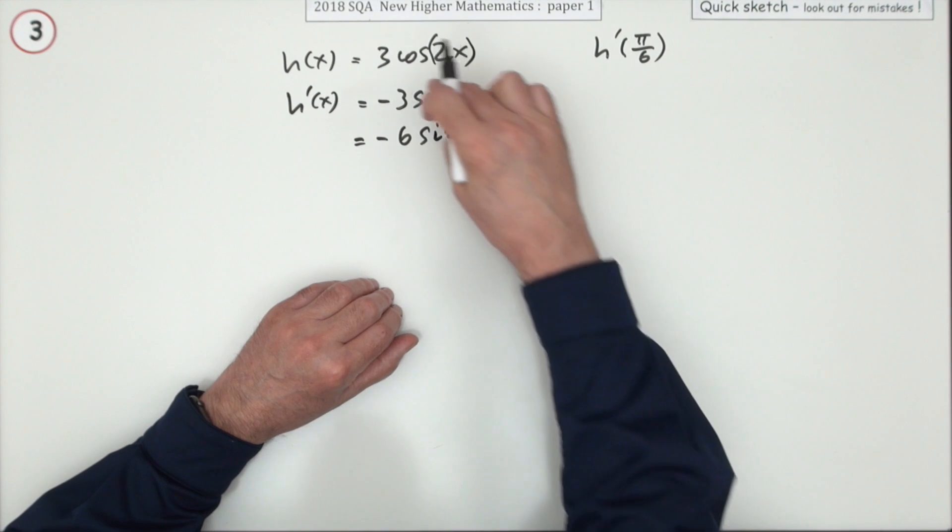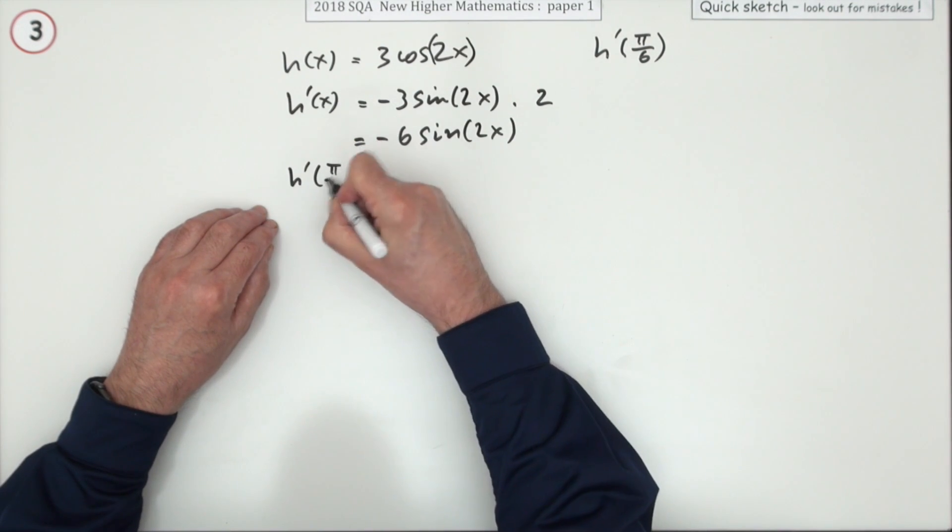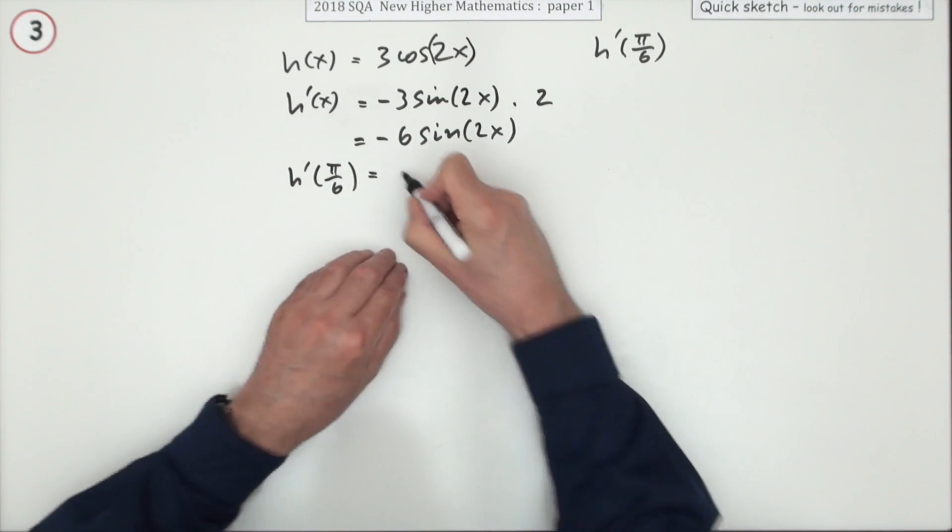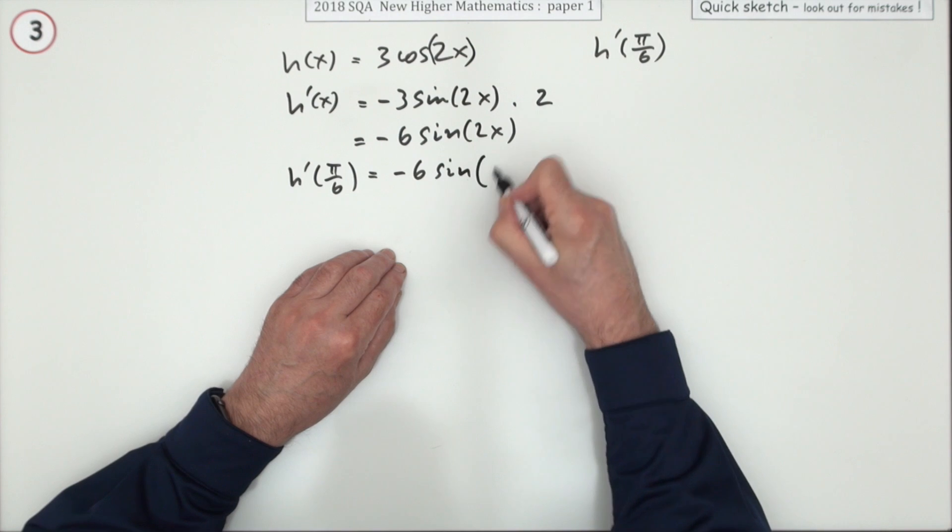Guessing that's the first two marks, one for the outer derivative, one for the inner derivative. And the last mark will just be for evaluating it. π/6, so it'll be -6sin of, now two times that'll be π/3.